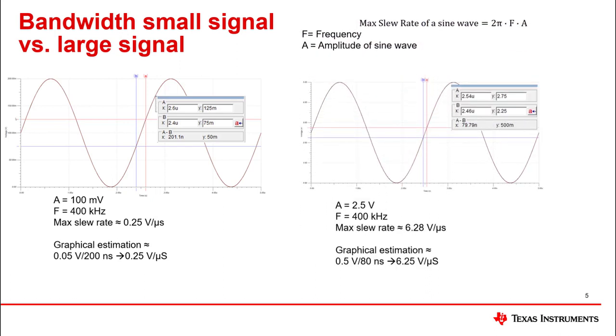If we increase the signal to 2.5 volts amplitude, the slew required is 500 mV per 0.08 microseconds. This, again converted to standard, translates to 6.25 volts per microsecond. At this larger amplitude, we see that we will be slew rate limited.